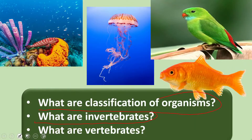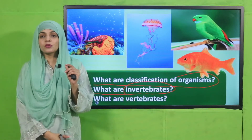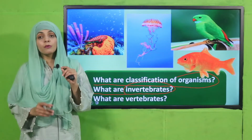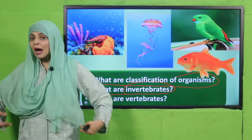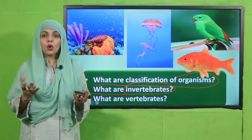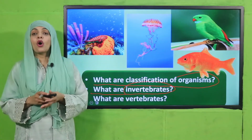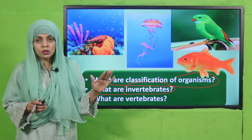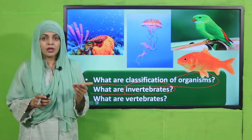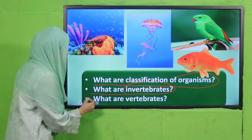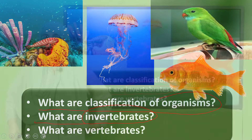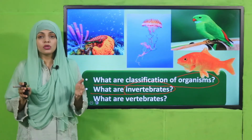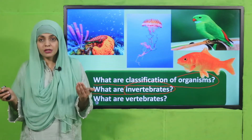What are invertebrates? Animals without a backbone, or animals with no bones, are called invertebrates. Now, what are vertebrates? Animals with a backbone, or animals with bones, are called vertebrates.